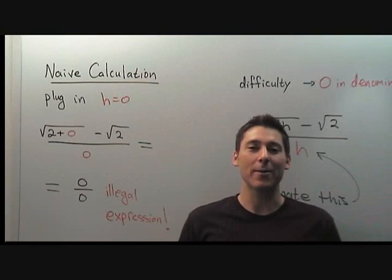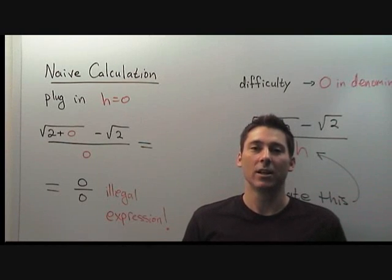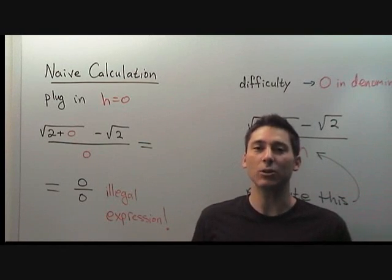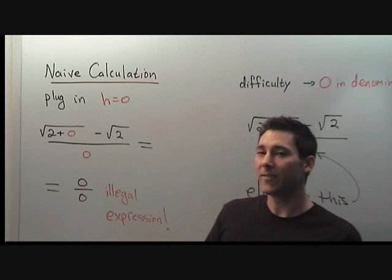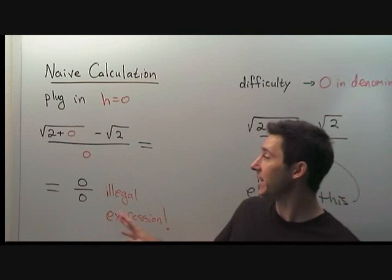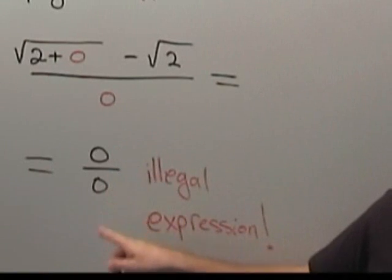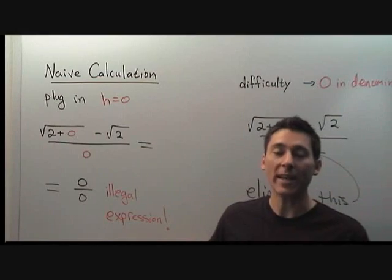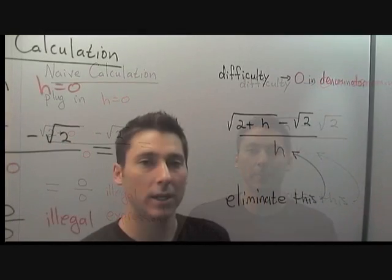The first step, as usual, is to perform a naive calculation. What that means is we actually plug in h equals zero to the expression. Evaluating that gives zero over zero, and this is illegal. We need to find a way to fix this.